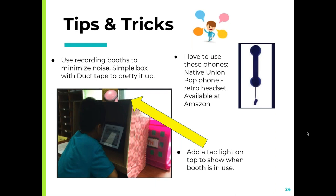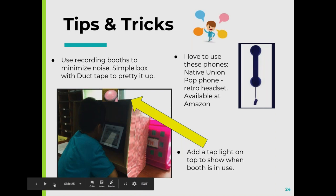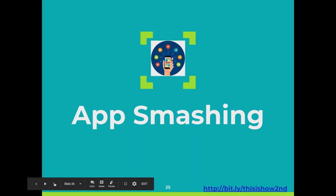For recording booths, it's simple — mine are just boxes that are duct-taped to make them pretty, with a little tap light on top. When students are using it, they turn the light on so others know to walk past quietly. I also love the Native Union brand retractable headsets — they plug right into computers and iPads to give you a recording device. Kids love them because they look like old-fashioned phones they don't see very often.